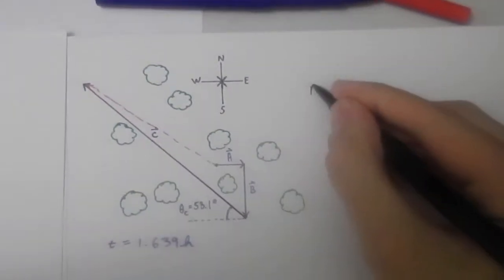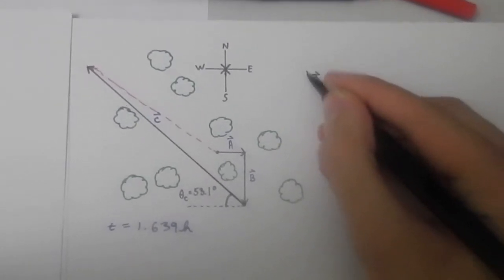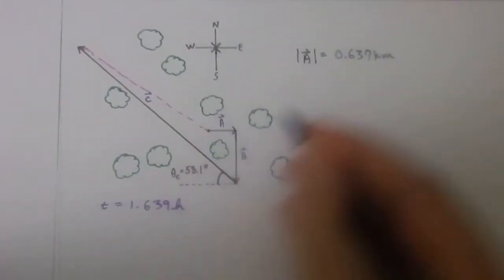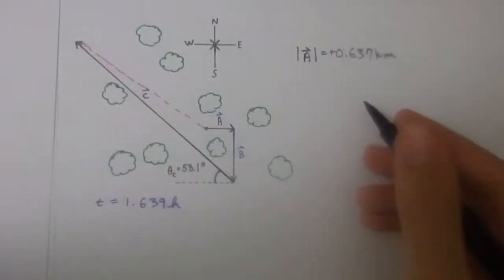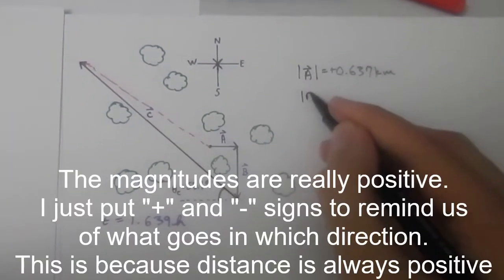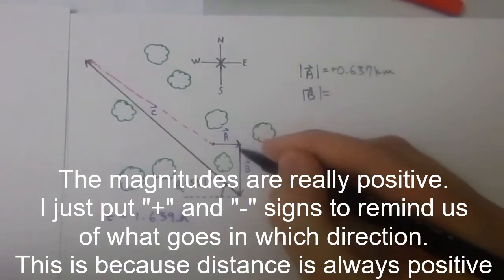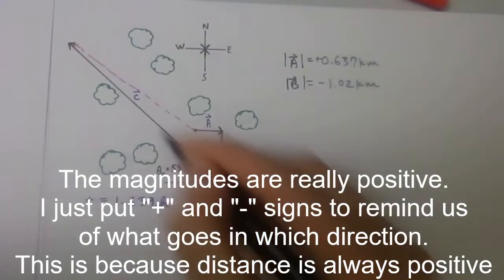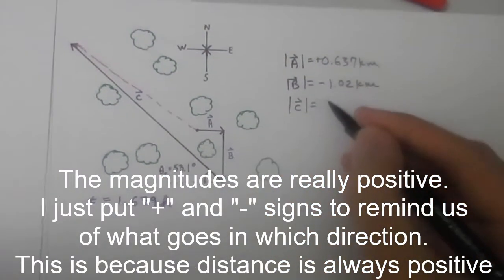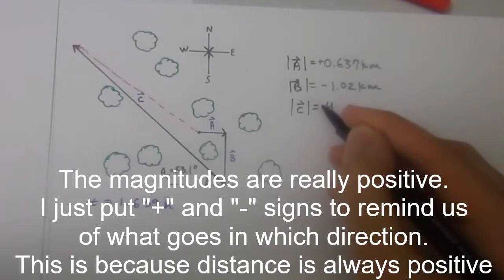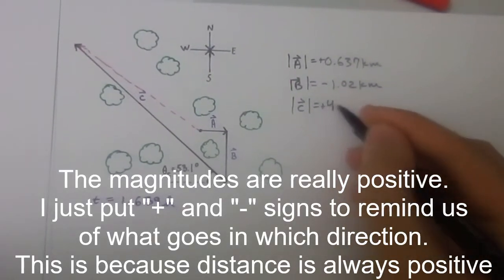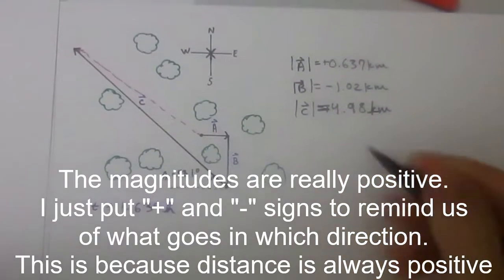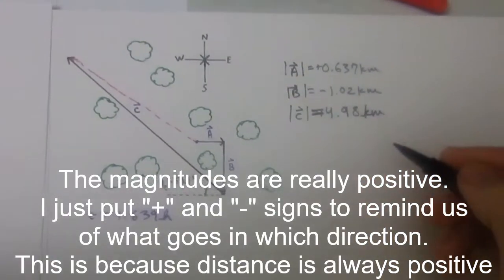Vector a has a magnitude of 0.637 kilometers and it's going in the positive direction. Vector b is going to be in the negative direction, negative 1.02 kilometers. And vector c equals 4.98 kilometers.